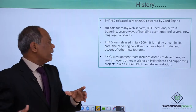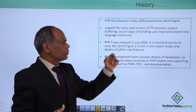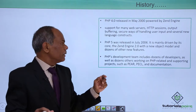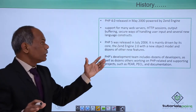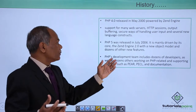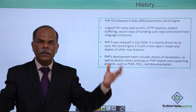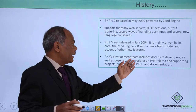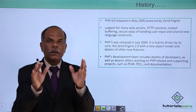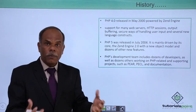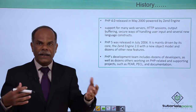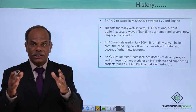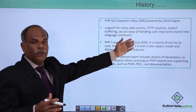PHP 5 was released in 2004. It is mainly driven by the Zend engine 2.0, which was revised with a new object model introduced at that time. PHP's ecosystem includes dozens of contributors, and the PEAR and PECL community libraries power the different extensions being added to the PHP extension repository day by day. That is how we have reached up to 2004.